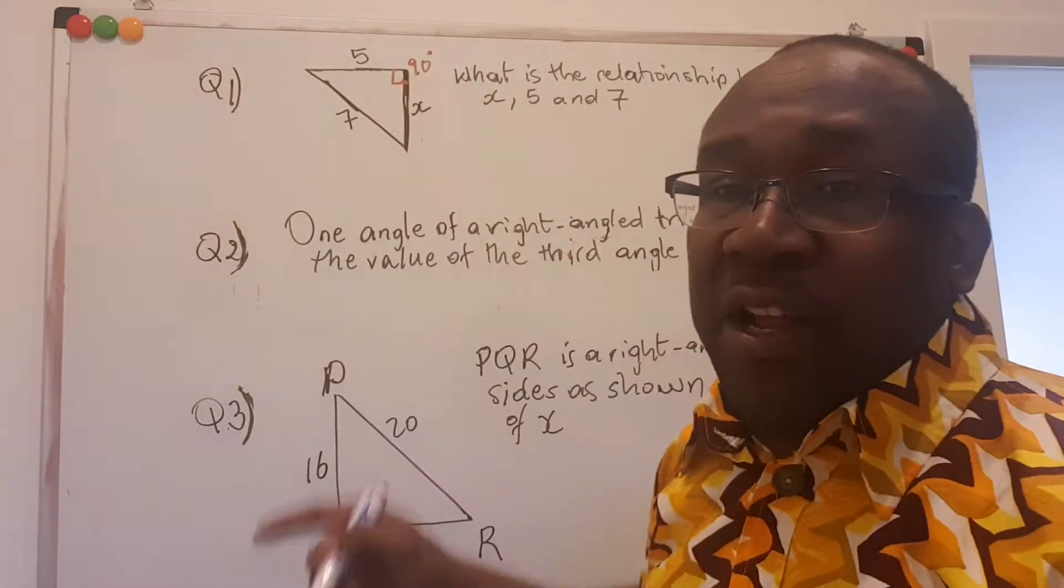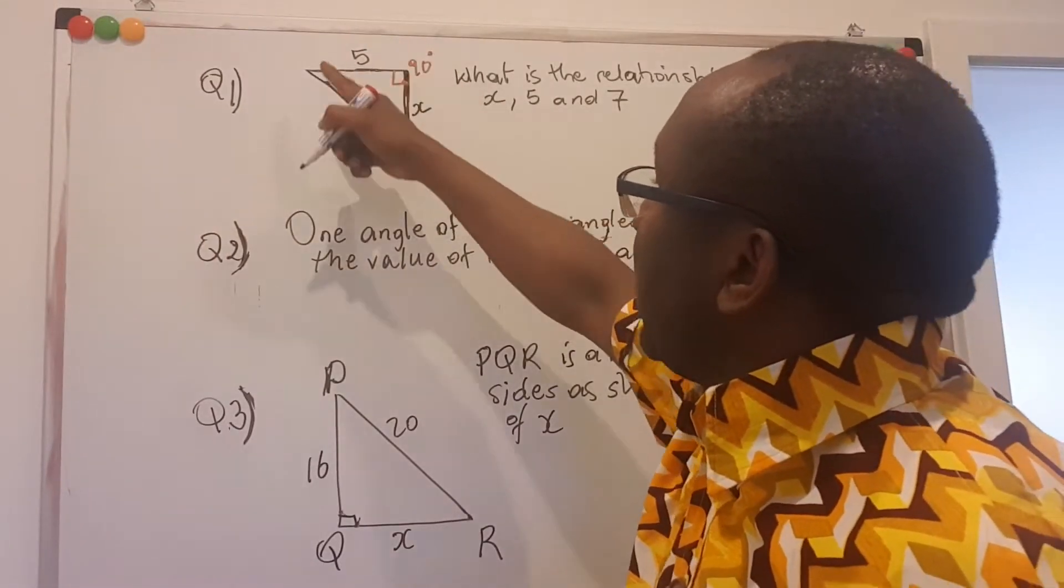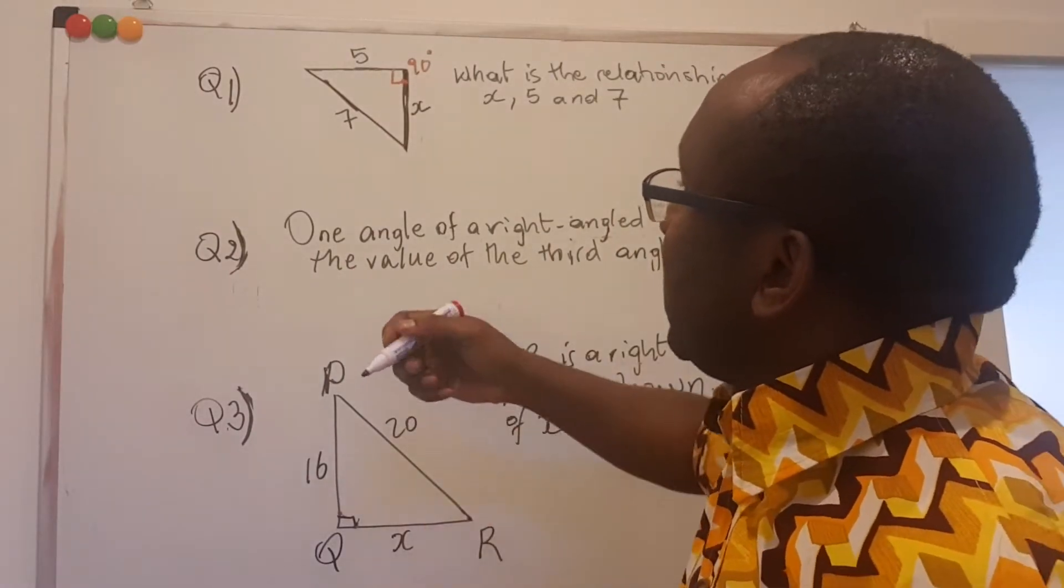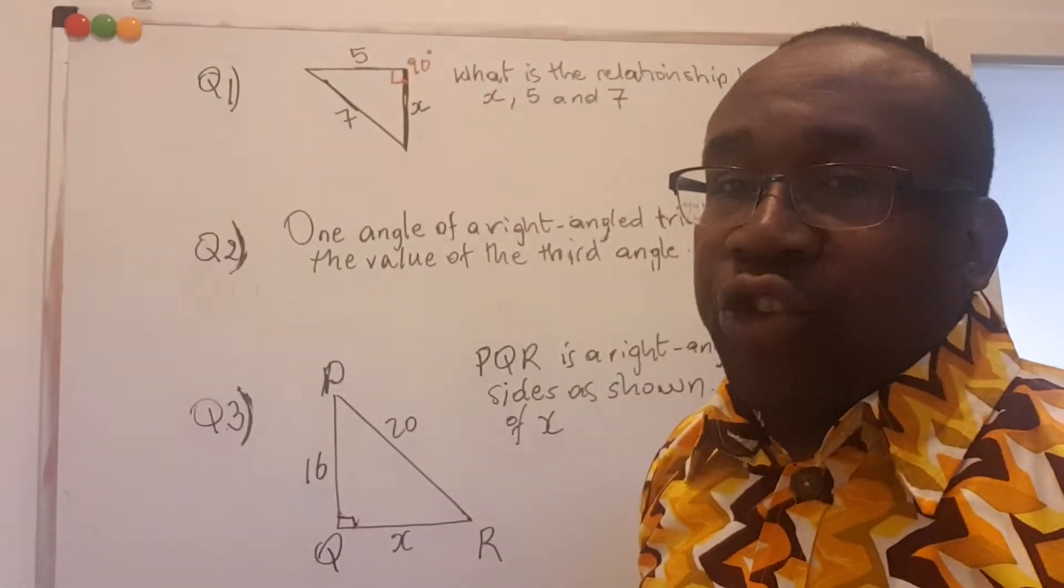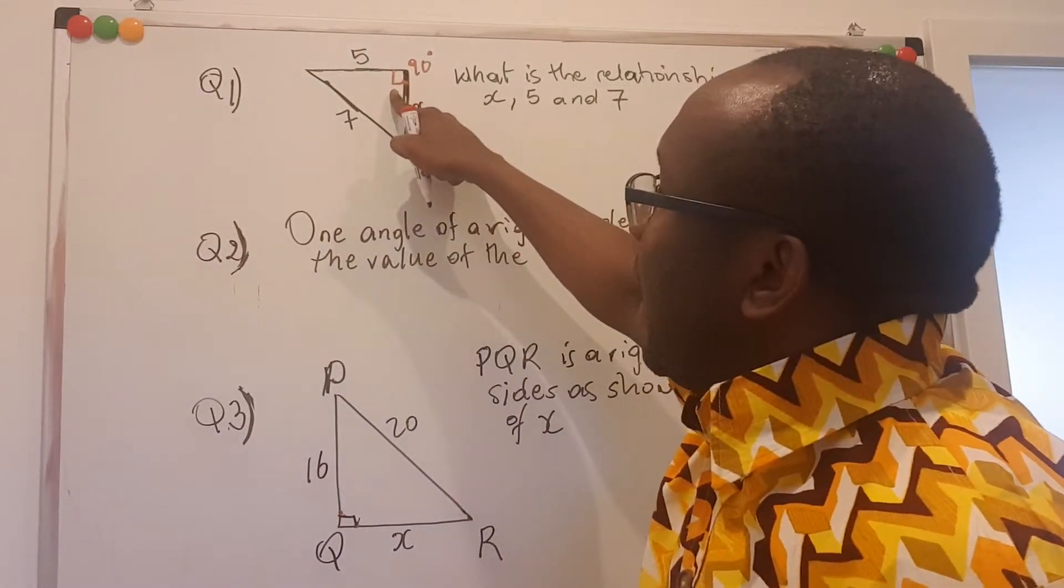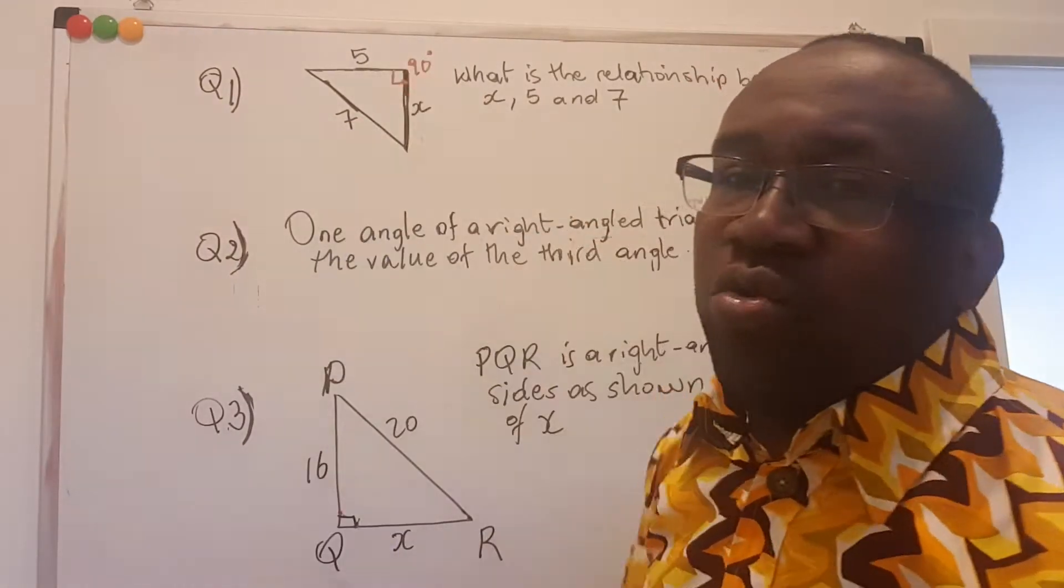So what is special about this type of triangle is that for a right angle triangle, the sides have a relationship built on the Pythagoras theorem. And the theorem simply says that in a right angle triangle, the square of the side opposite the right angle, which is the hypotenuse, is equal to the sum of the squares of the other two sides.